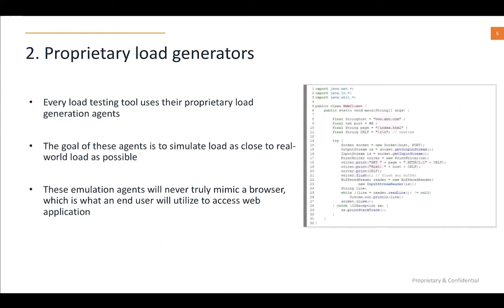The third problem is proprietary load generators. Every single tool in the market right now uses its own version of a load emulation agent. These agents aim to be as close to real-world as possible, but they will never truly mimic what the end consumer uses, which is a real browser. Your end consumers are not using emulators — they're using a real browser. As a result, when you go from tool to tool across the performance testing ecosystem, you will have differences in request/response times simply because of how the load is being generated.